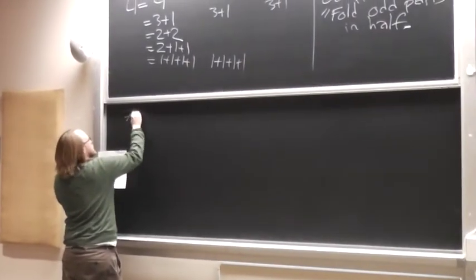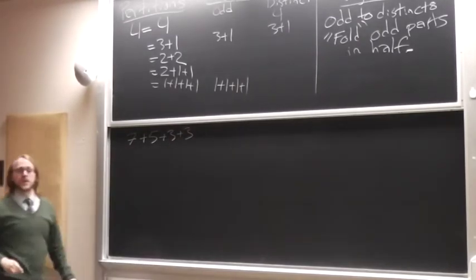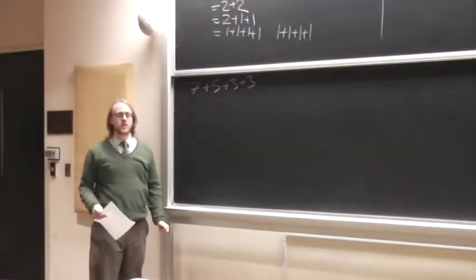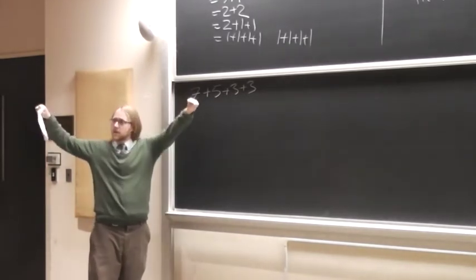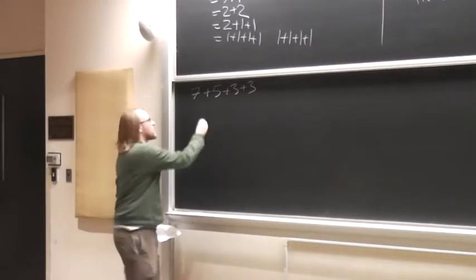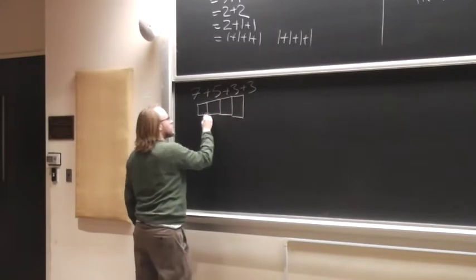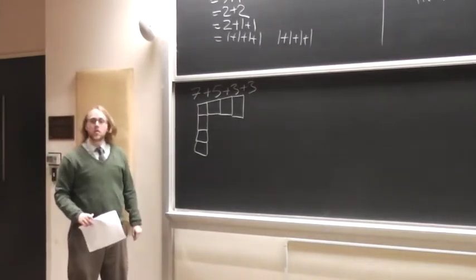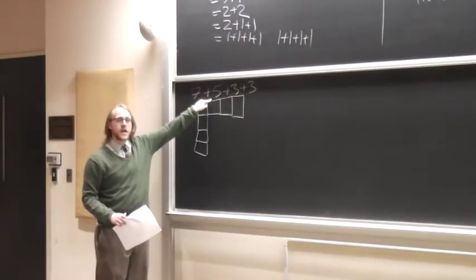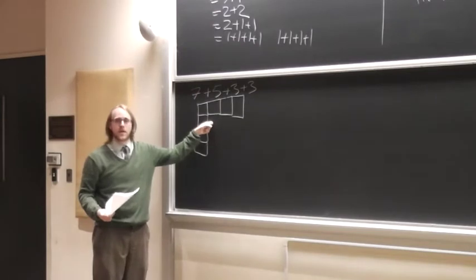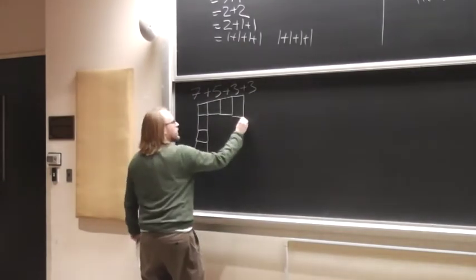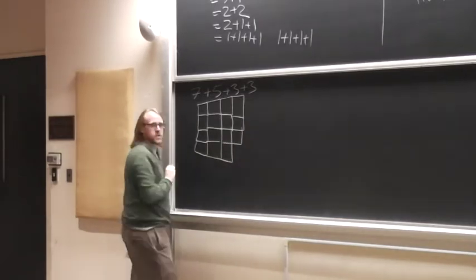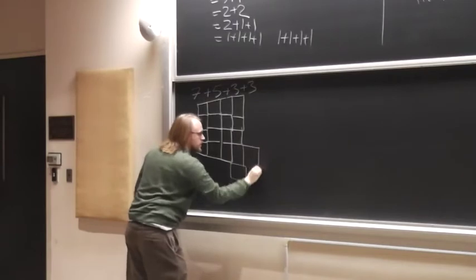Let's say our partition is seven plus five plus three plus three — this is a partition into odd parts. For each part successively, starting with the biggest, we take seven, think of a line with seven boxes, and fold it in half. We keep doing this for each part in succession: take five, a row of five boxes, bend it in half and stick it on. So here is our seven, here is our five, here is our three, and then we have one more three that sticks down.